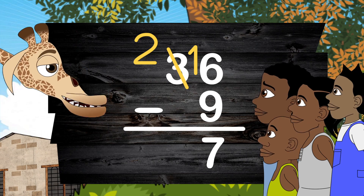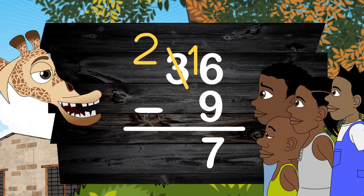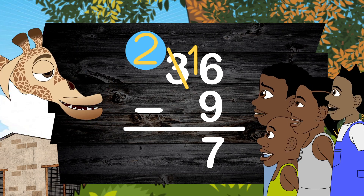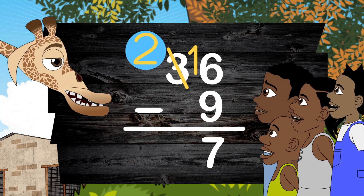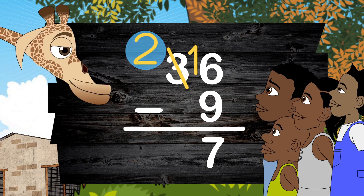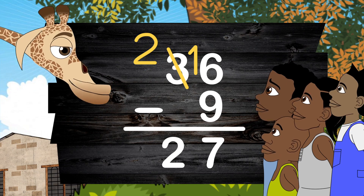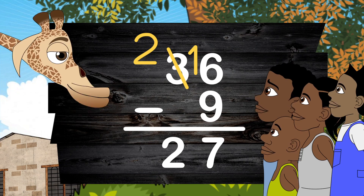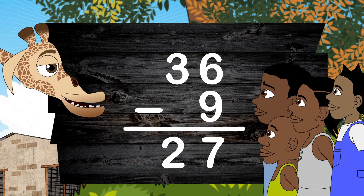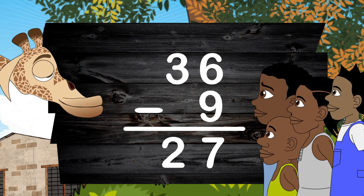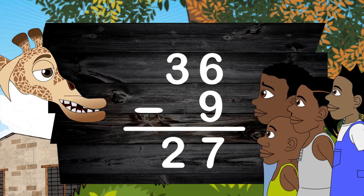And we took 1 from the 10's. So now, how many 10's are left? 2 tens are left. We have 2 tens left. It's simple as that — you just follow the rules. 36 subtract 9, you know the answer: the answer is 27. We follow the place values and we got our answer.